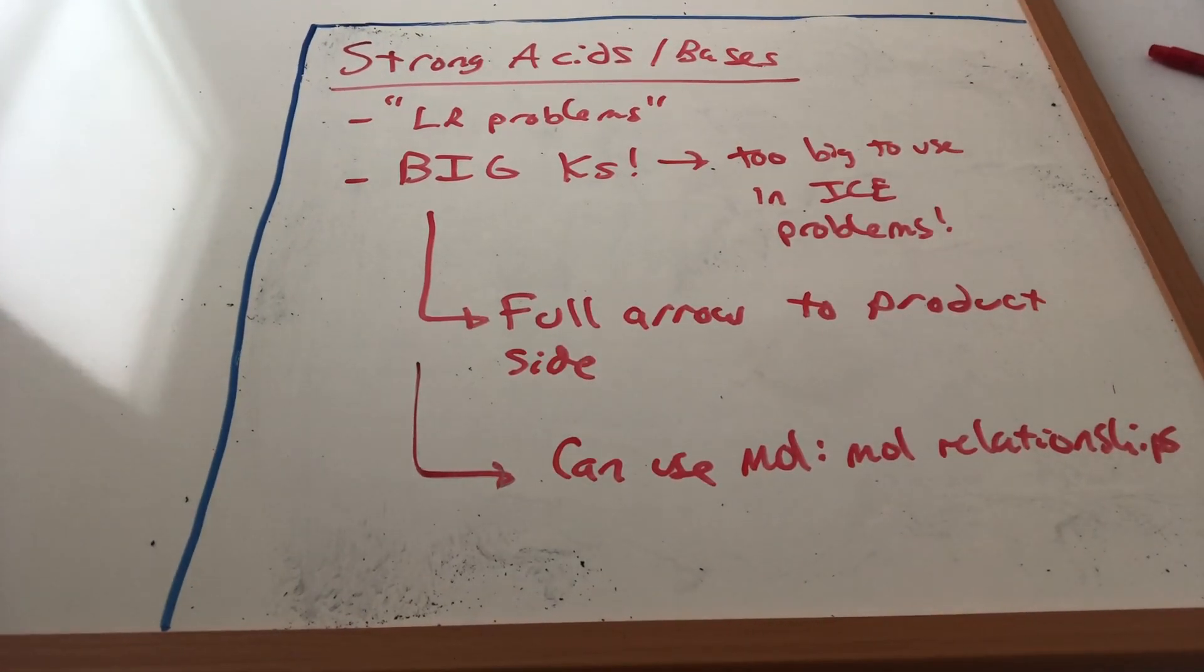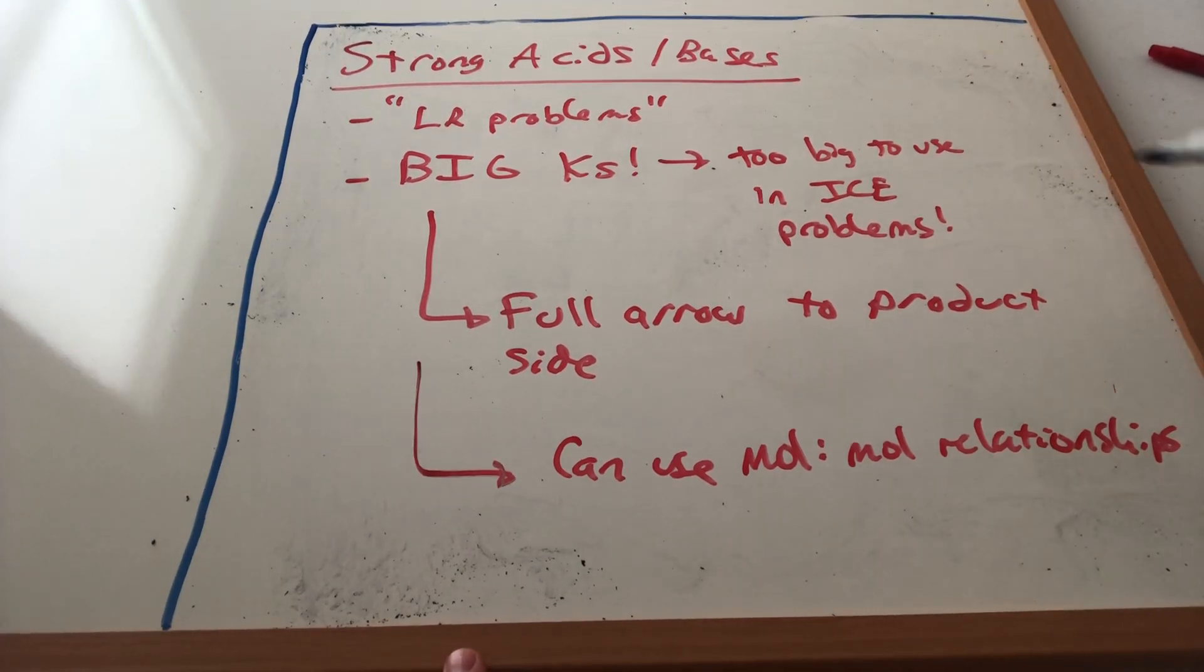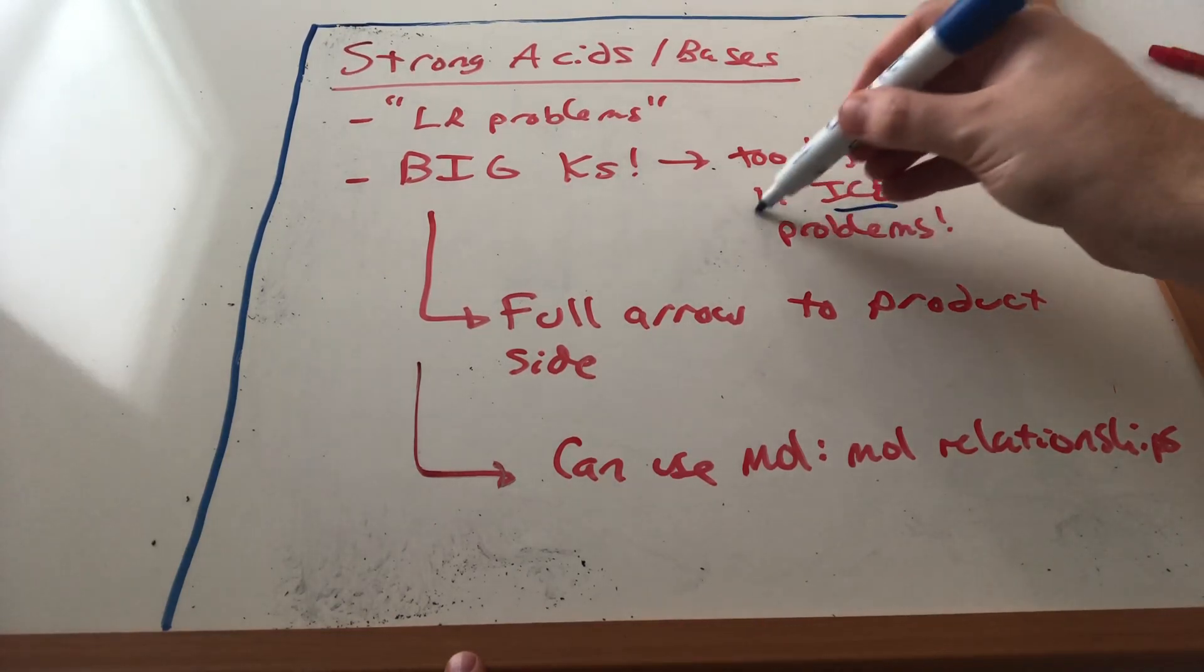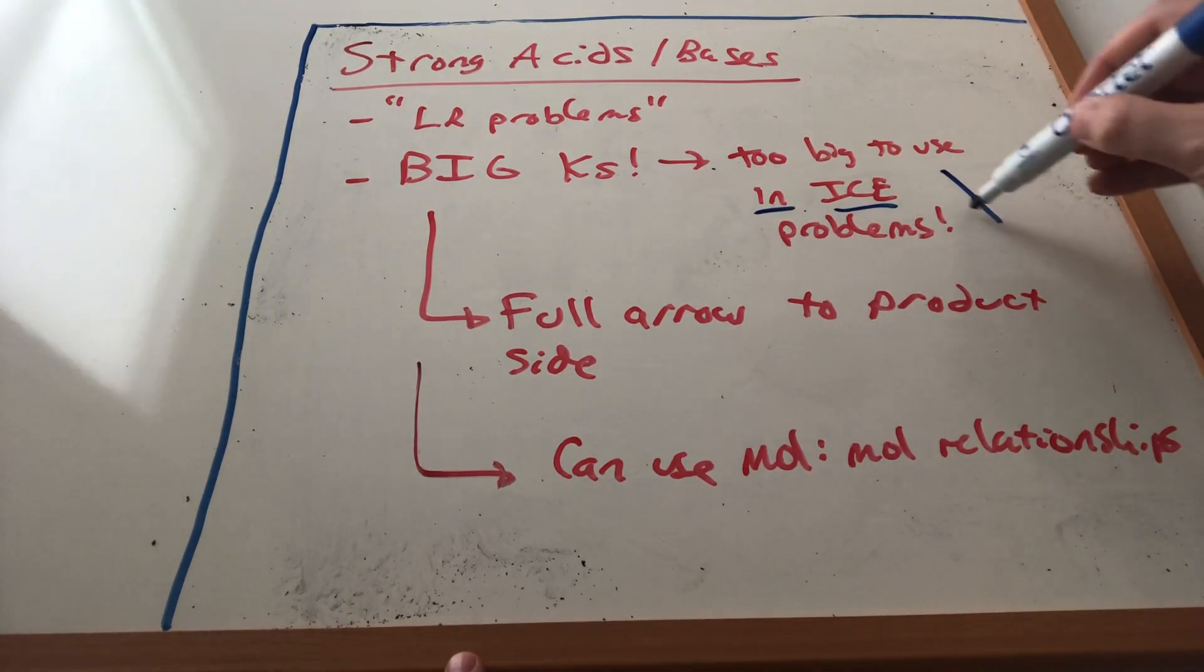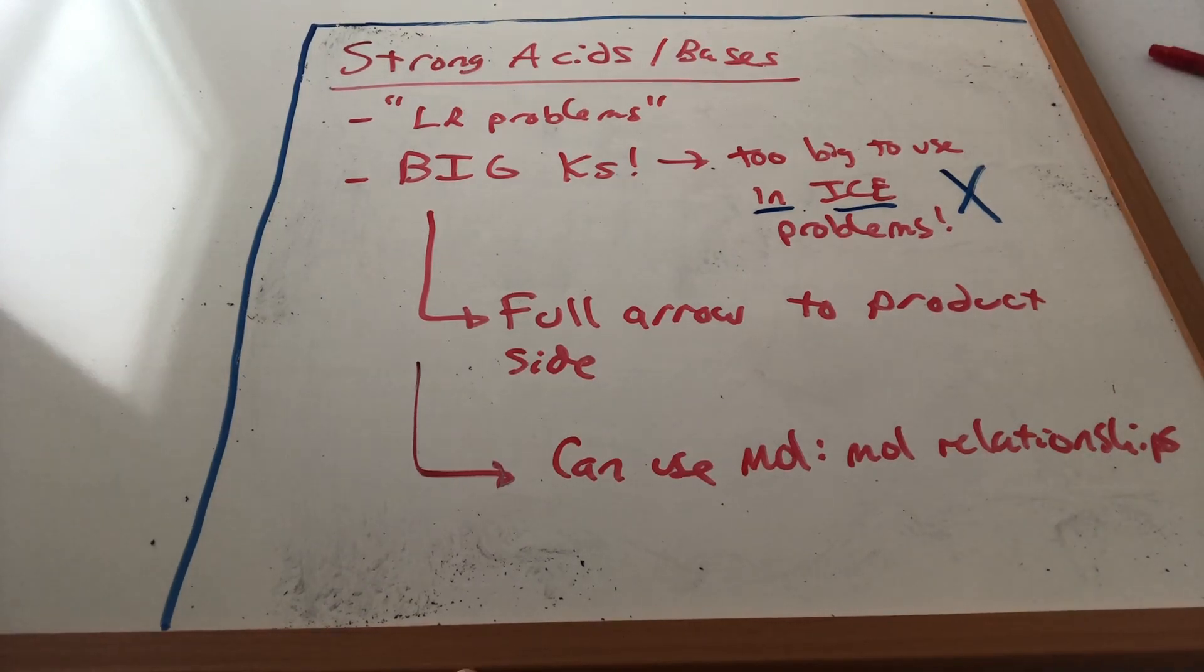Next up is a discussion of strong acids and bases. So far we've been focusing on weak species which require equilibrium problems. We're going to go over a way to identify strong acids and bases. Essentially it's going to be a bit of memorization, but once you do, the things that I want you to be attaching in your mind to strong acid and base behavior is that they are not going to be involved in ice type problems.